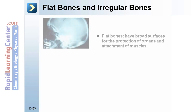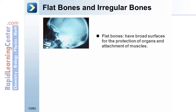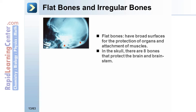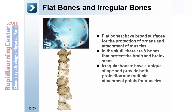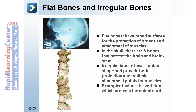Flat bones have broad surfaces for the protection of organs and attachment of muscles. In the skull there are eight bones that protect the brain and brain stem. Irregular bones have a unique shape and provide both protection and multiple attachment points for muscles. Examples include the vertebrae, which protect the spinal cord.